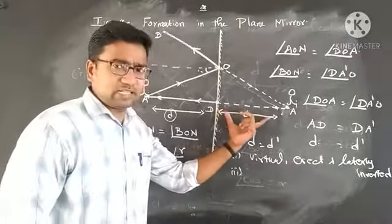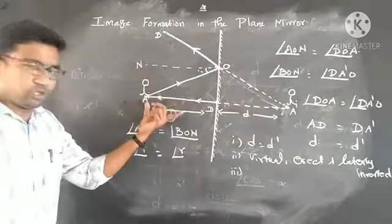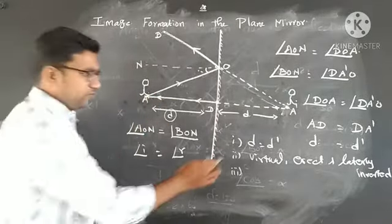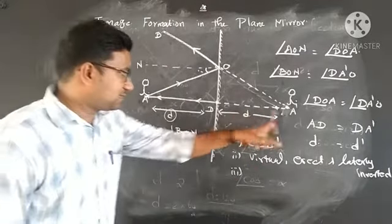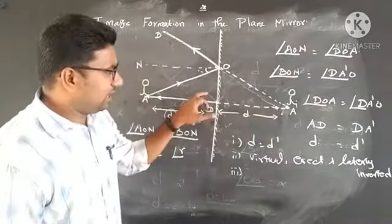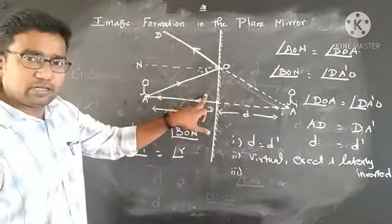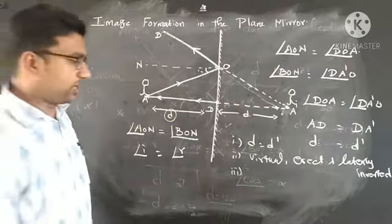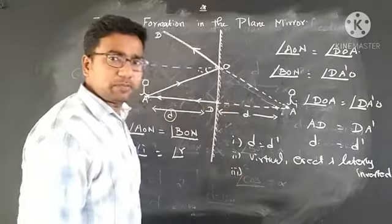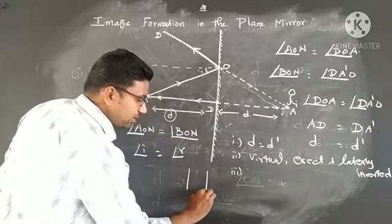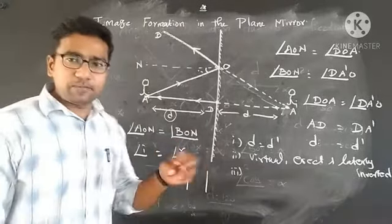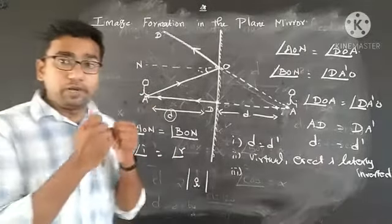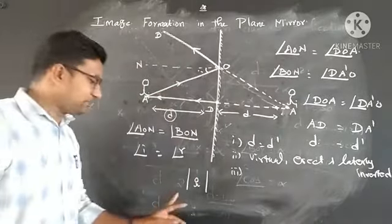The distance of the image formed is equivalent to the distance of the real object. That is why we discussed d equal to d prime — the distance of the image inside the plane mirror is equivalent to the distance of the object in front of the plane mirror. Now, if you are supposed to place the object between two plane mirrors, how many images will be produced at a given angle between the mirrors?